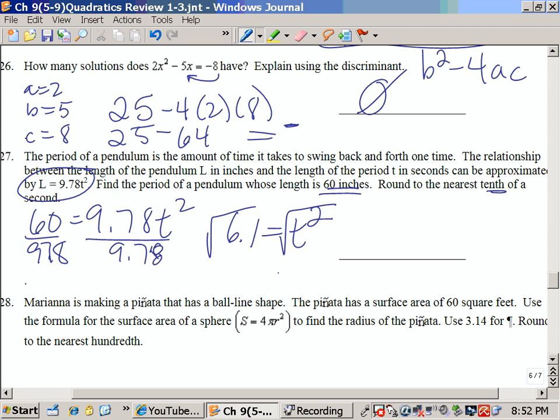Then I need to take the square root of both sides, and let me see if I can take the square root of 6.1. And that gives me 2.476. So that is t equals 2.5. I'm not going to use the plus or minus because this is talking about length.